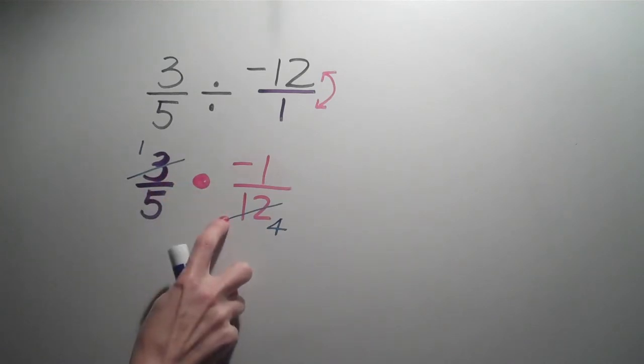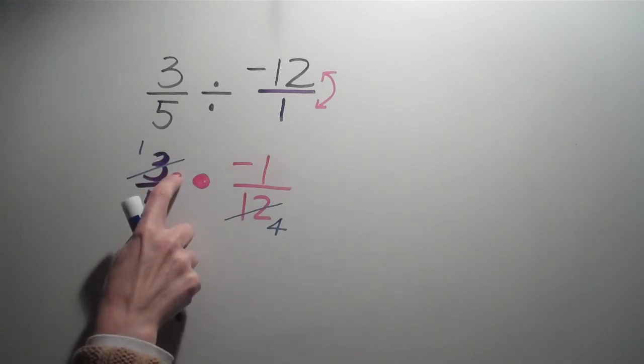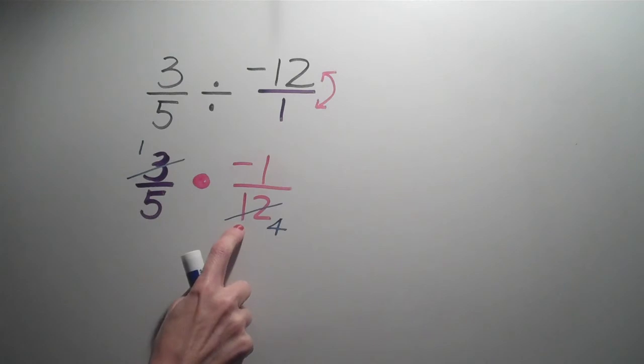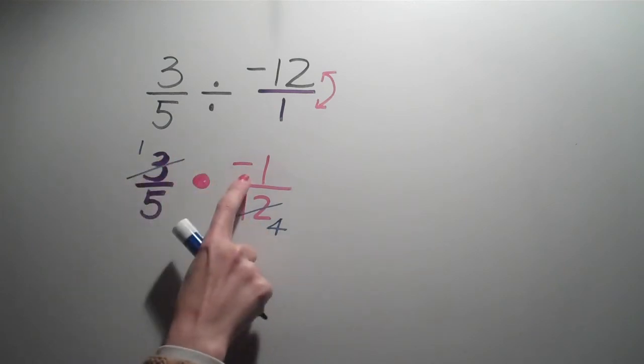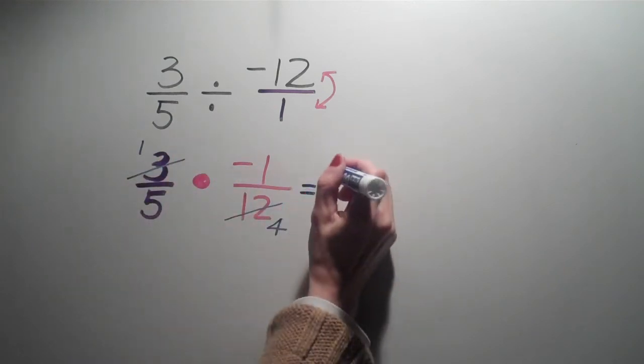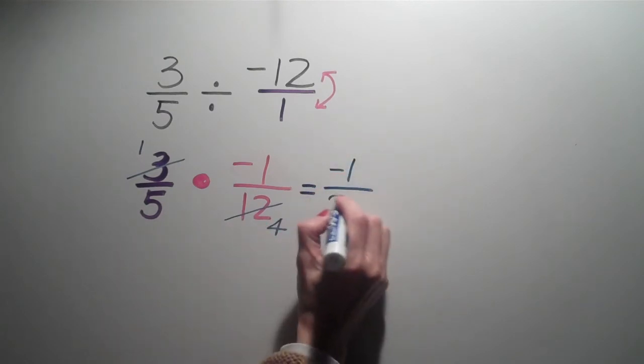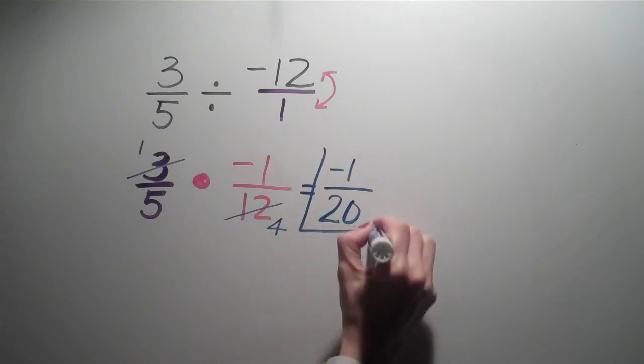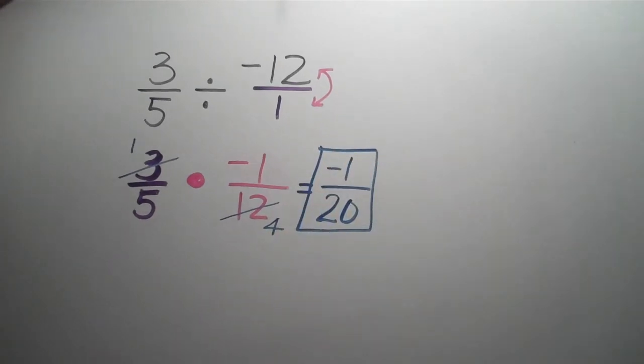3 fits into 3, and 3 fits into 12. So I can divide both of those by 3. 3 divided by 3 is 1, 12 divided by 3 is 4. Now the 1 and the 5 only have a 1 in common, so now we multiply straight across. 1 times negative 1 is negative 1 over 5 times 4 is 20. And that's our final answer.